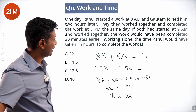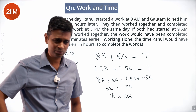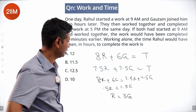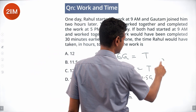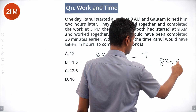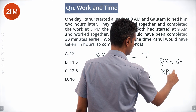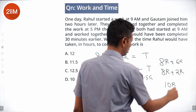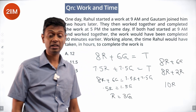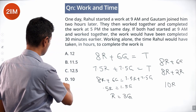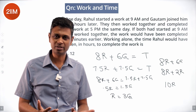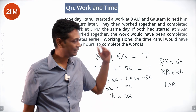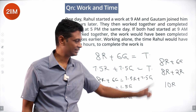Working alone: 8R + 6G = 8R + 2R = 10R (since 6G = 2R). So 10R completes the task, meaning Rahul alone takes 10 hours. Very routine question — set up output per hour, total output, equate to task, simplify.